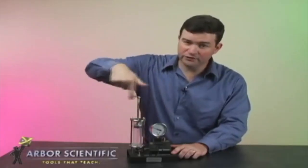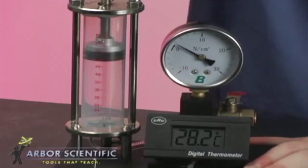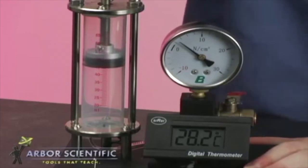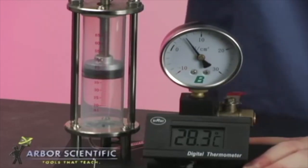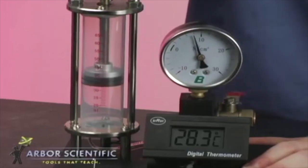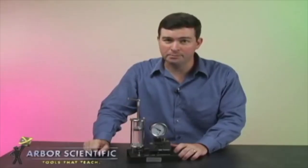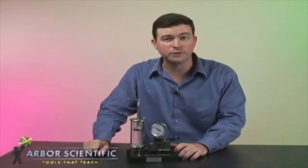Turn the piston to change the volume even more. Wait a few seconds for the temperature reading to stabilize. Make sure you read the temperature before the air in the piston balances with the temperature in the room.